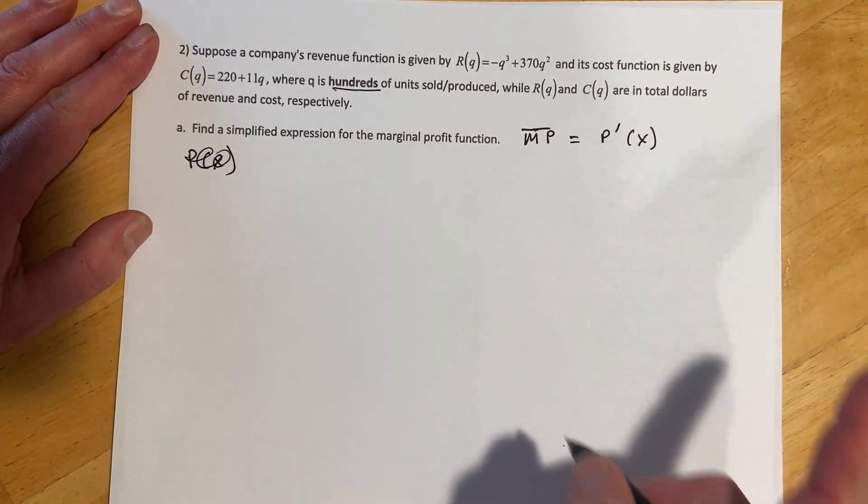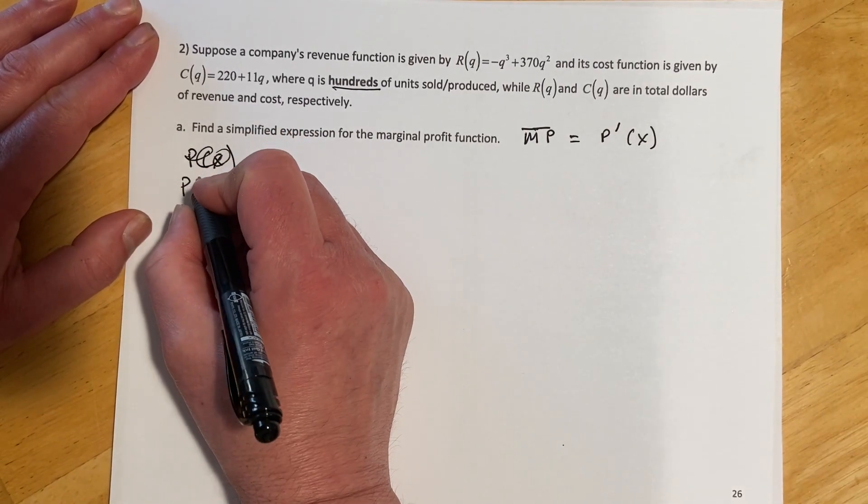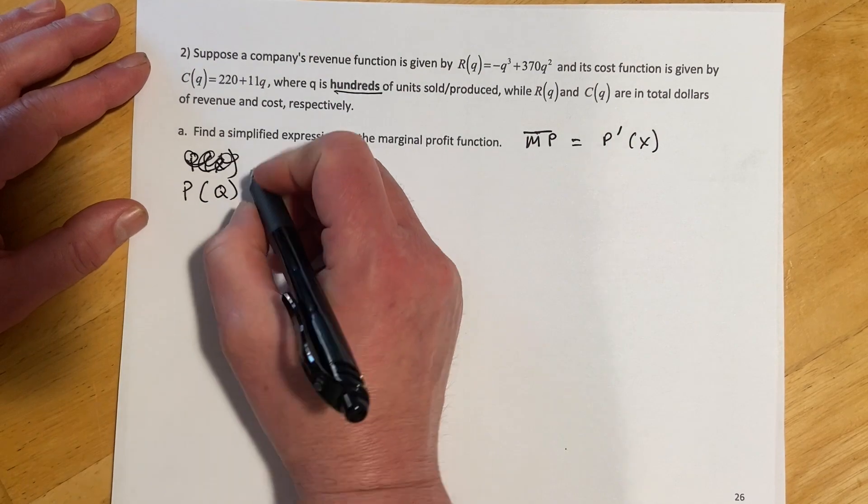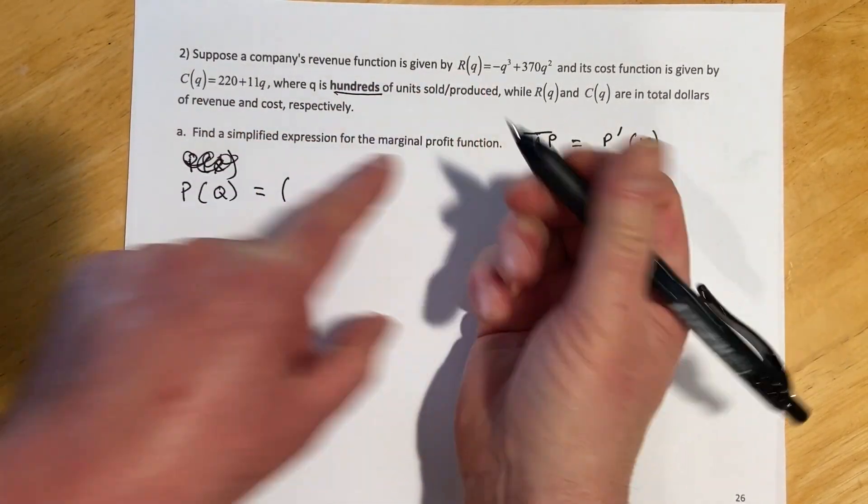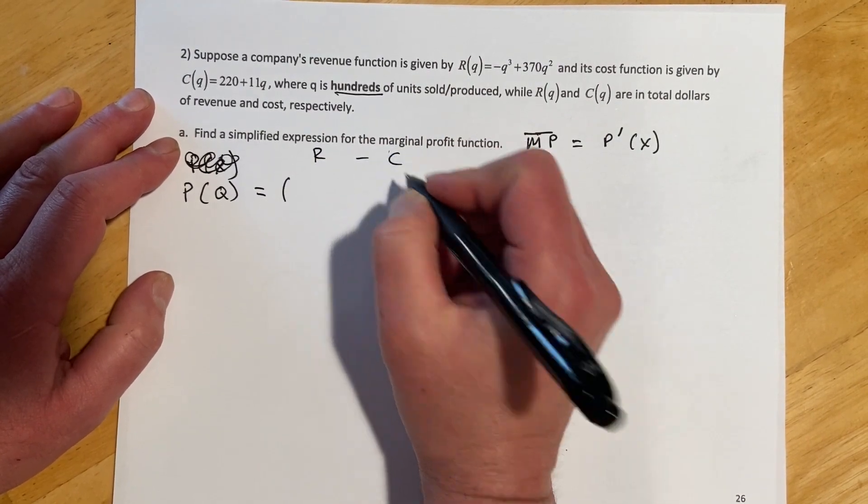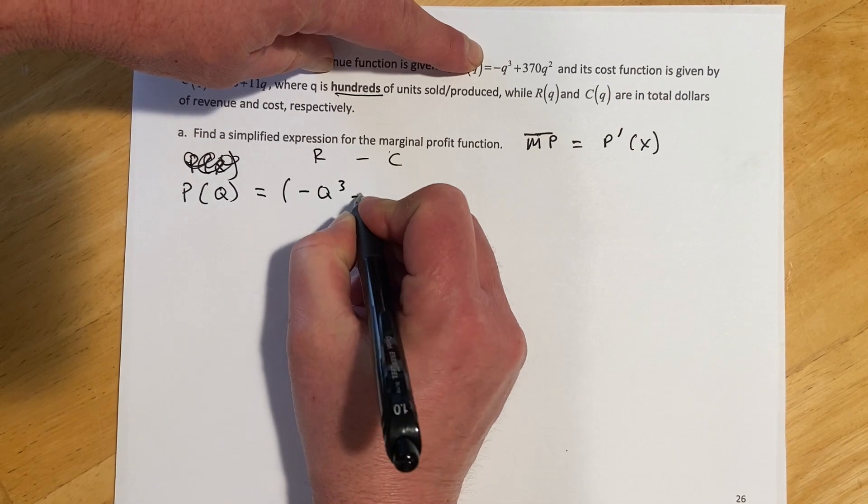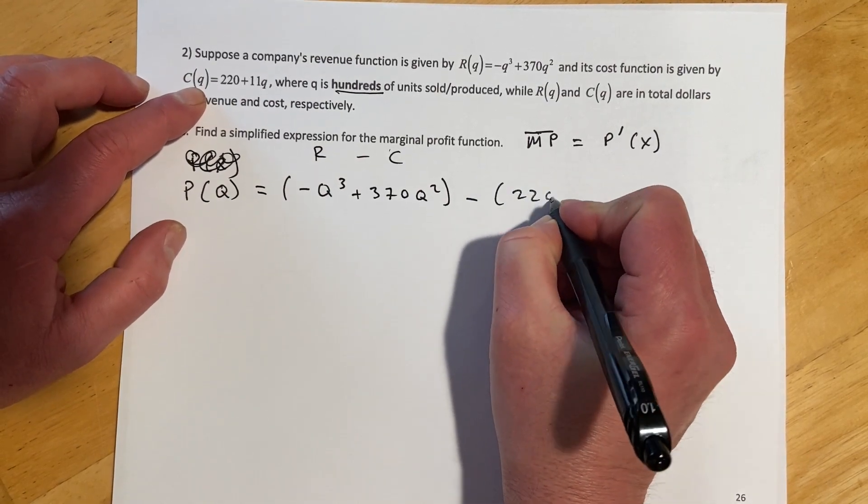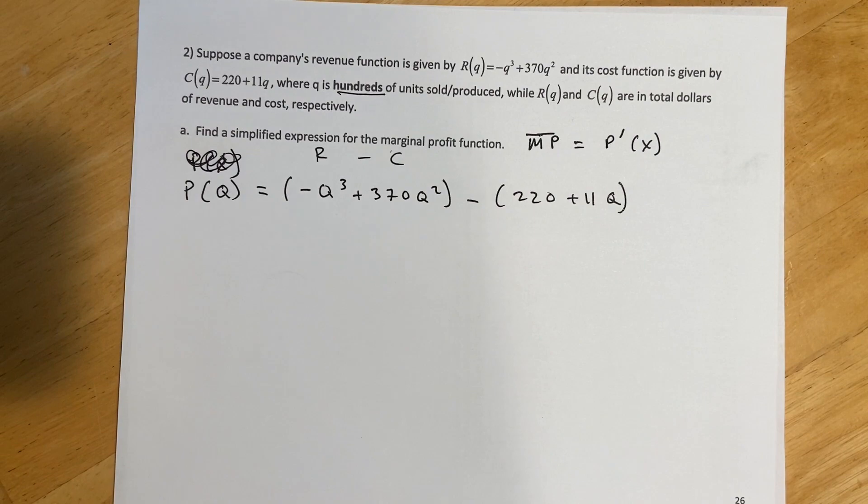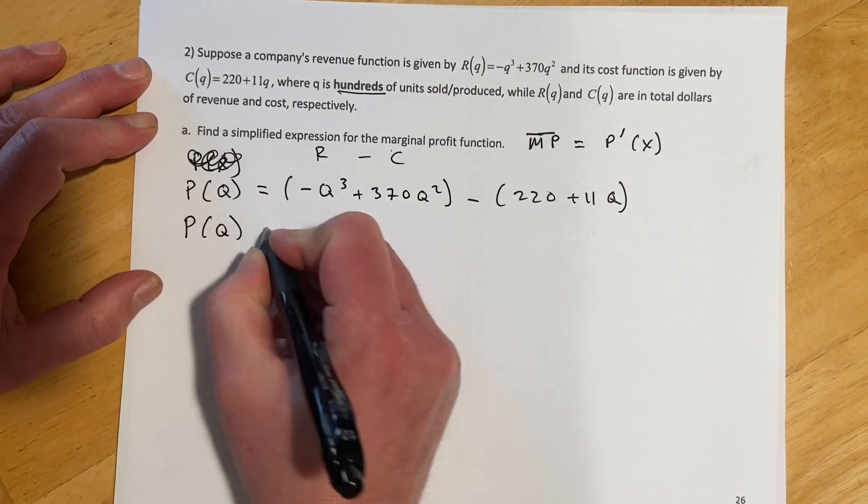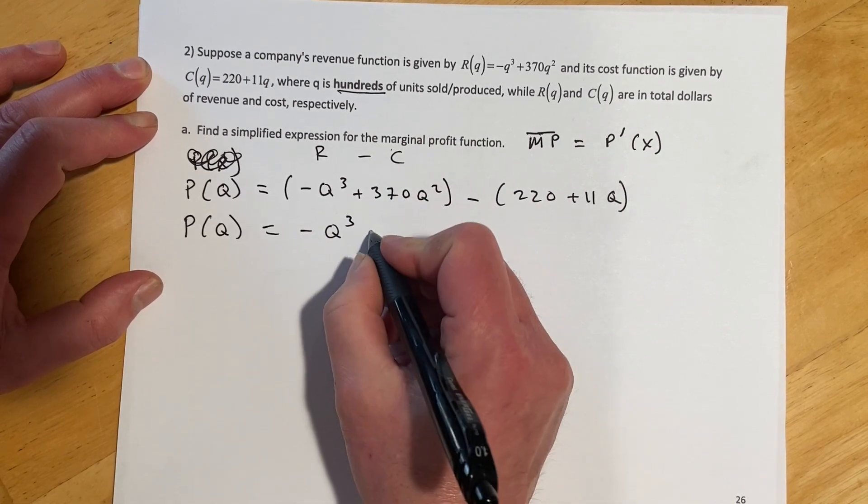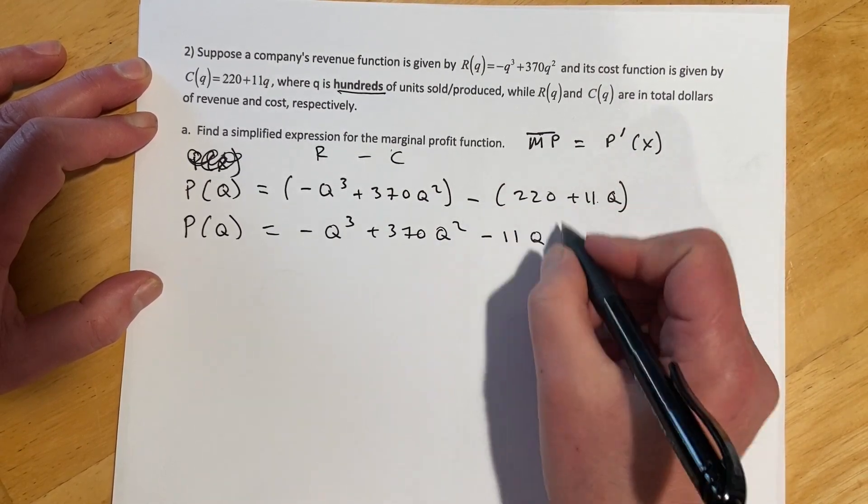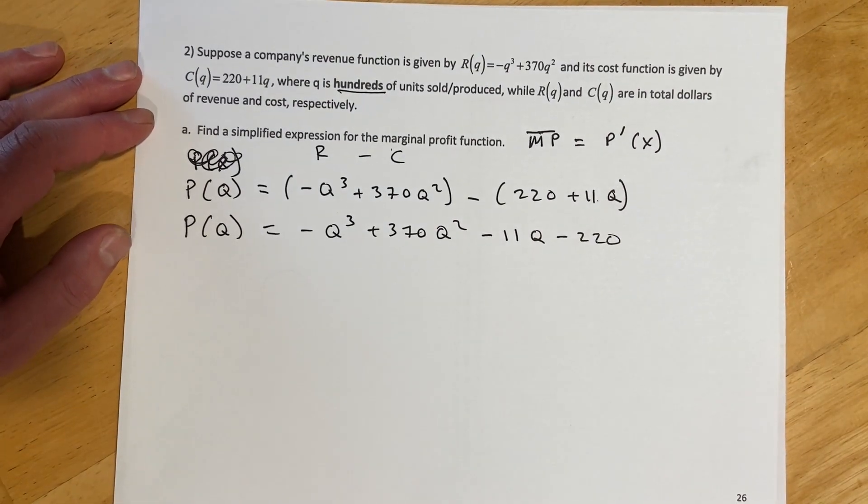So we're going to say P of X is going to, oh, that should actually be a Q. I'm going to use capital Qs because my lowercase Qs look like A's and 9's and all sorts of things. So I'm going to use a capital Q just to try to make it clear. So P of Q is going to equal revenue. So that's right there. So revenue minus cost. And there's a revenue function minus our cost function. And then cleaning this up a little bit, we're going to get P of Q equals negative Q cubed plus 370Q squared. I'll go descending order here. So minus 11Q and then minus 220. And so that's our profit function, but that wasn't what it asked for.